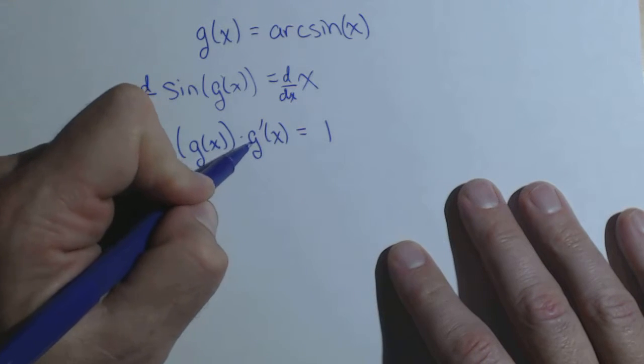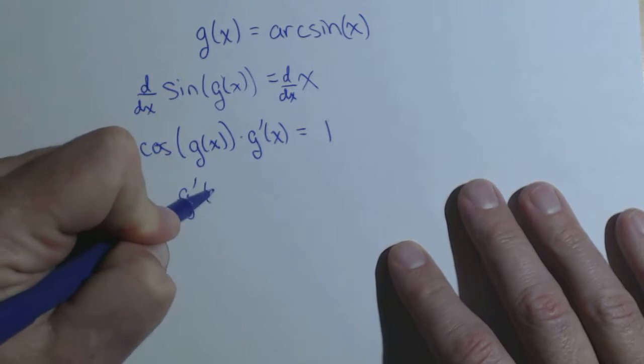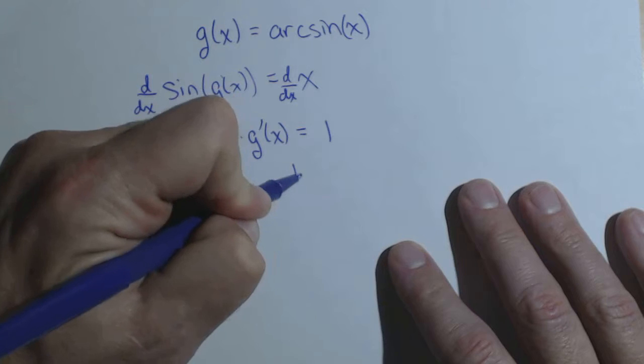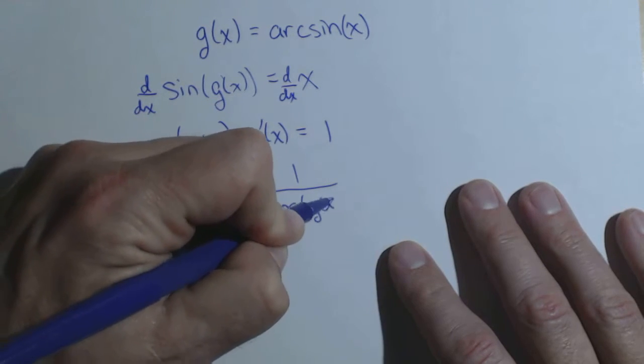What I want is g prime of x, so I'm going to divide both sides by the cosine of g of x. And I get that g prime of x equals one over cosine of g of x.